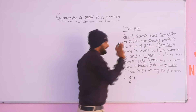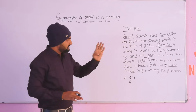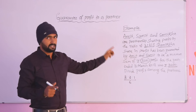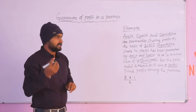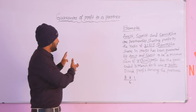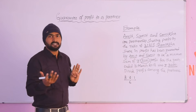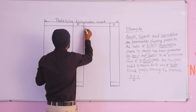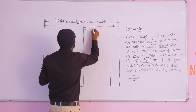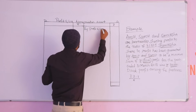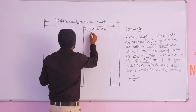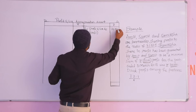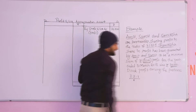Divide the profit among the partners. The minimum guarantee value must be checked. Amit and Sumit have given the guarantee. The profit of 36,000 is earned for the year ending 31st March. After adjustment, what accounts are affected? Total balance is transferred to partner capital accounts as per their profit-sharing ratio.